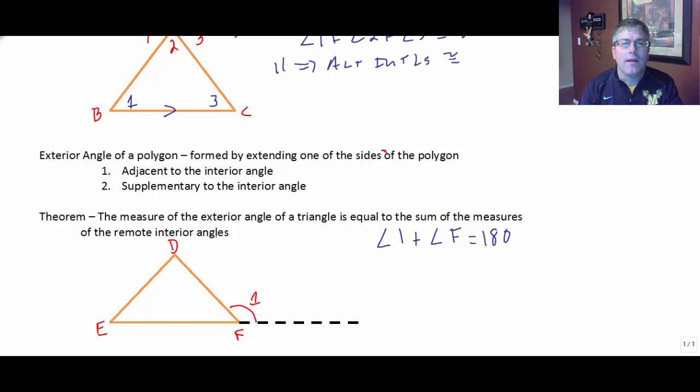And we're only going to do one exterior angle per vertex. So I could extend DF out that way, I have another exterior angle, or I can extend DE out and have one exterior angle. But we'll only do one exterior angle per vertex. And a couple properties of that exterior angle. It will be adjacent to the interior angle, or next to it. And it's supplementary to the interior angle. So the interior angle and the exterior angle will be supplements.